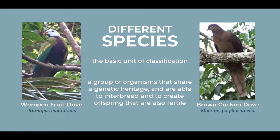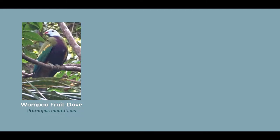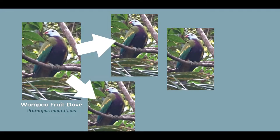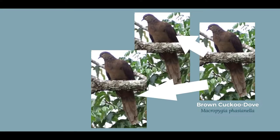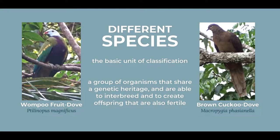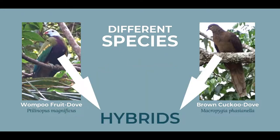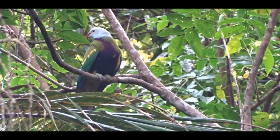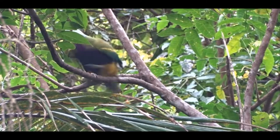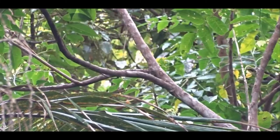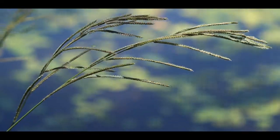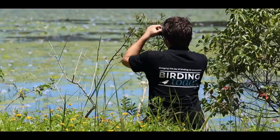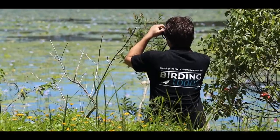Basically, this means that this Wompoo fruit dove only reproduces with other Wompoo fruit doves, and this brown cuckoo dove only reproduces with other brown cuckoo doves. However, there are cases in which different species can and do interbreed, resulting in hybrids. But we will explore this later in the series. I realise this first video is not principally dedicated to the species classification, but it's a critical aspect of taxonomy, and one that we need to be familiar with if we're to understand avian taxonomy.